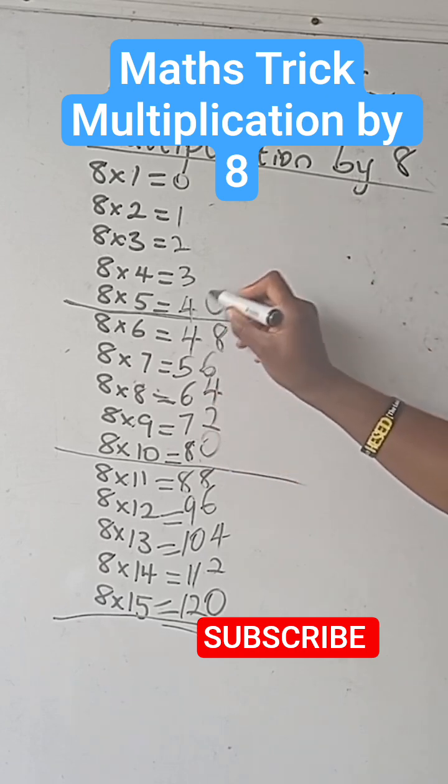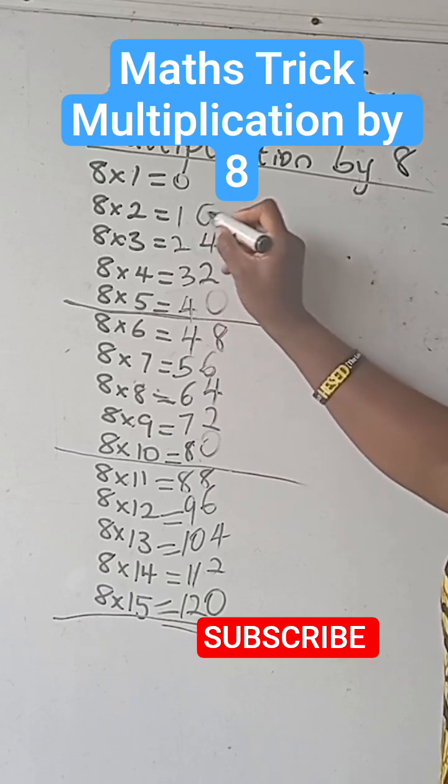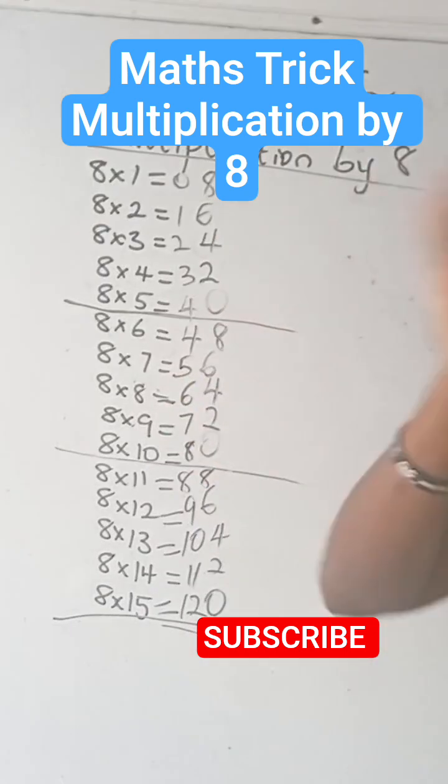After 8, you go again. 0, 2, 4, 6, and 8. That is it for your multiplication by 8. Bye-bye.